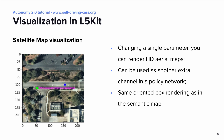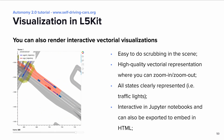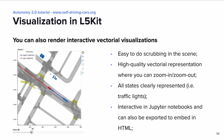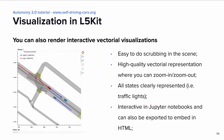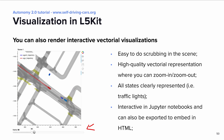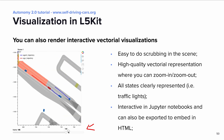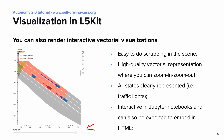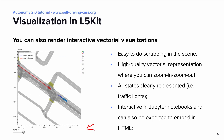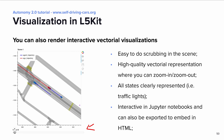In L5Kit, you can also render high-quality interactive vectorial visualizations, as you can see in the image on the left. It is very easy to scrub the scene frames using the slider at the bottom. You can also see that all states are clearly represented — an example of that are the traffic lights represented by the orange color in the lanes. You can also have this visualization interactive in Jupyter Notebook or export it to embed in any HTML file.